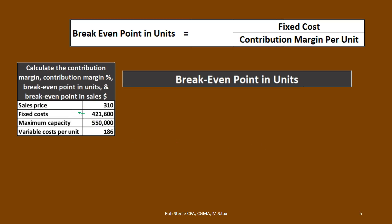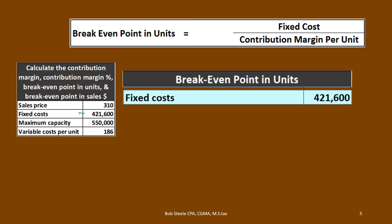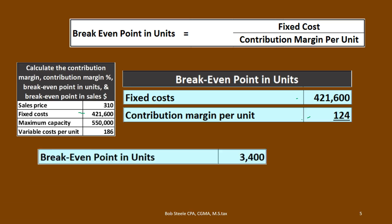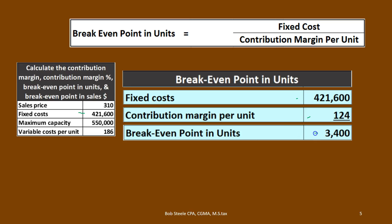The fixed costs in this case are $421,600 — things like rent that don't change. We divide that by the contribution margin per unit of $124, which is what we walk away with after each unit sale after variable costs, not including fixed costs. Dividing $421,600 by $124 means we need to sell 3,400 units in order to break even — that's how many units we need to sell to just cover the fixed costs.